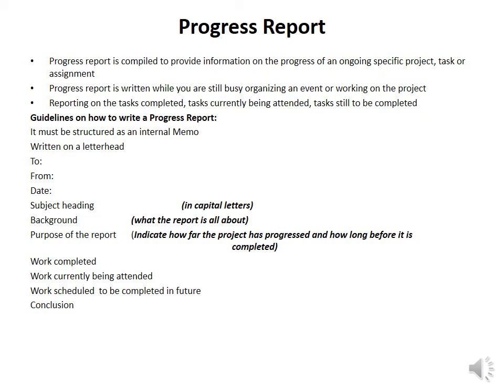You will divide your purpose to state, for example, that you are in stage two or stage three of your renovations in terms of sorting out the roof or doing the painting. Under 'Work Completed', you put what has been done. Under 'Work Currently Being Attended', you state what you are still busy with. Under 'Work Scheduled to be Completed in the Future', you state what needs to be done and any challenges. In the conclusion, you state what challenges you are facing, how far the work has been done, and what assistance you need from your managers.